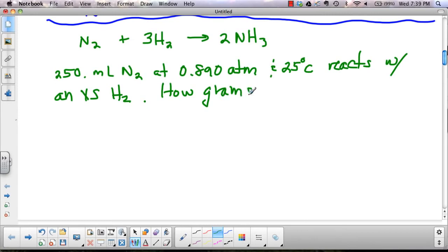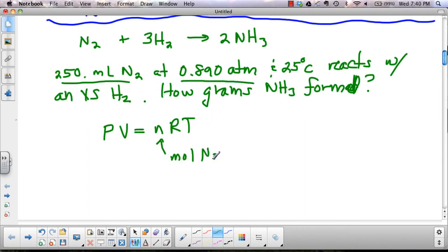So this is kind of the opposite of the one we just did. In this case, we're actually going to start with PV=nRT. And we're going to use that to find our moles of nitrogen because that's what we have, the volume of nitrogen and the pressure of nitrogen. So we're going to find our moles of nitrogen and then we'll do some stoichiometry over to grams.